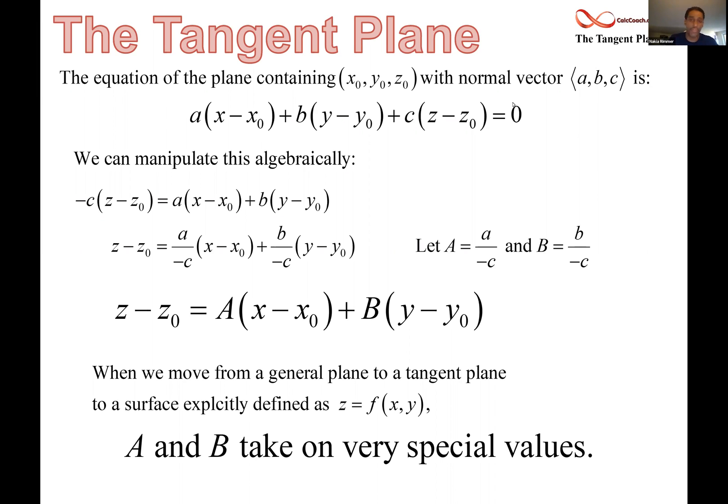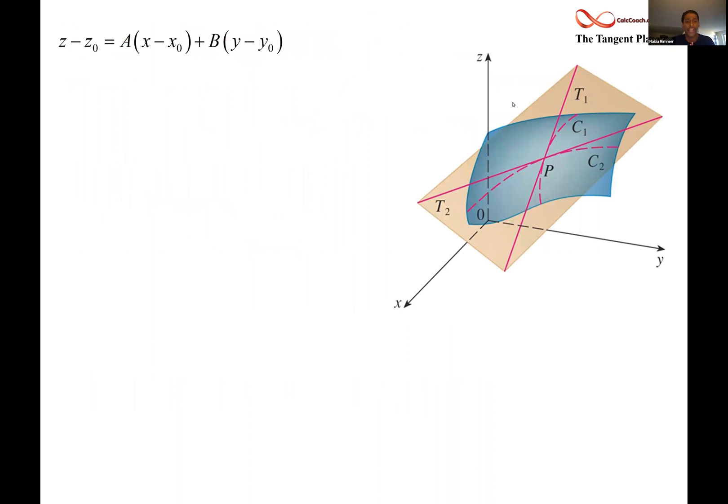You see A and B, they can take on very special values. So what we have here is the blue is the surface. We have the equation of any plane up there on the left. And what we're going to do is make a slice. We're going to slice this at y equals y naught. That's a plane, y naught units removed away from the x, z plane. And what happens is you get that curve C1. That curve is called the trace of the surface. It's where the surface intersects that plane, y equals y naught.